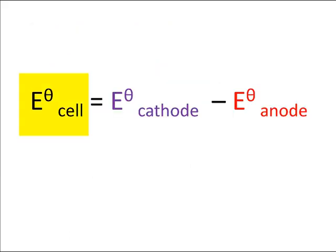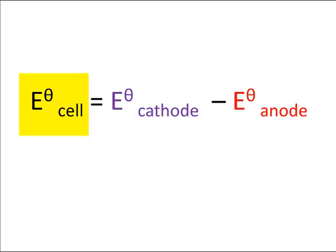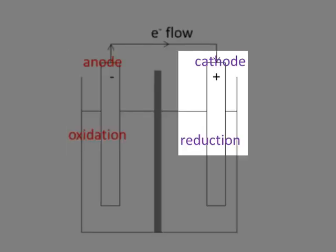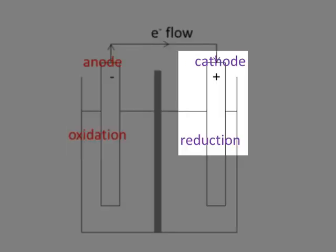To put it more formally, the standard electrode potential of the cell — indicated by the superscripted zero — refers to conditions of 1 molar and 25 degrees Celsius. If those conditions were not met, an adjustment would be needed. The standard electrode potential of the entire cell is found by the difference between the standard electrode potential of the cathode and the standard electrode potential of the anode. Remember, the anode is where oxidation happens and the cathode is where reduction happens. In a voltaic cell, the anode is negative and the cathode is positive.